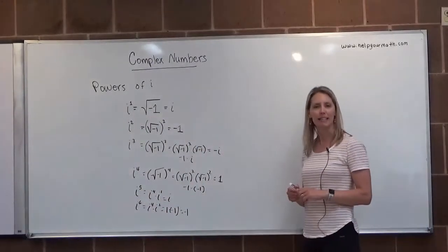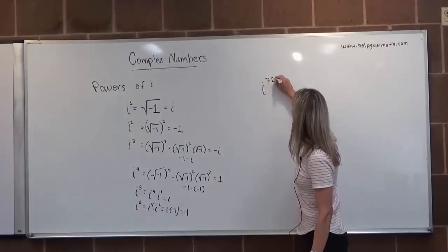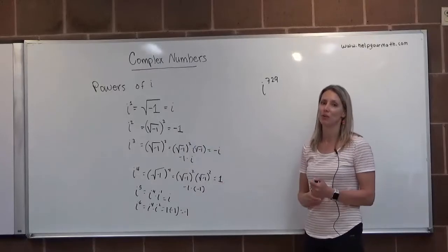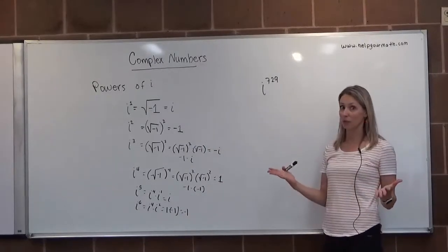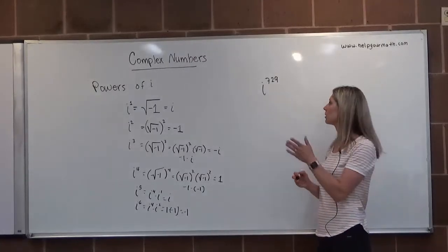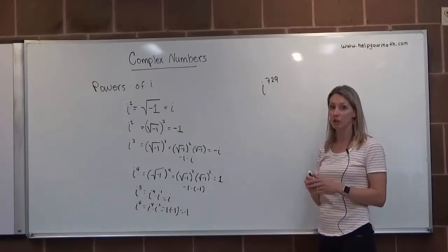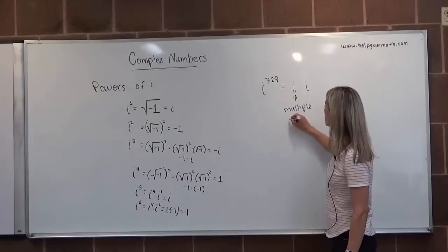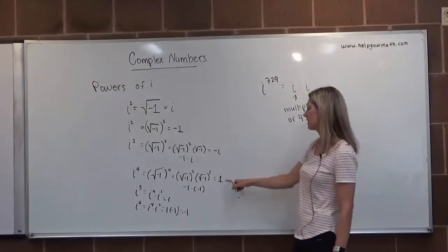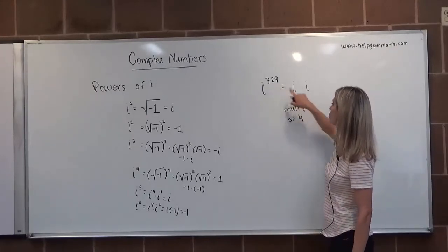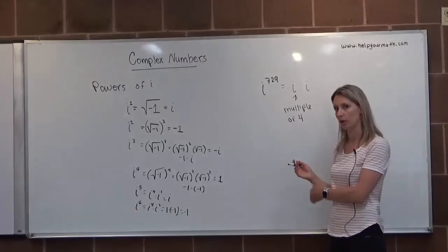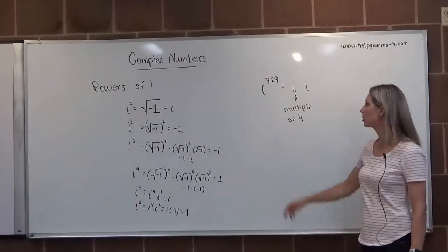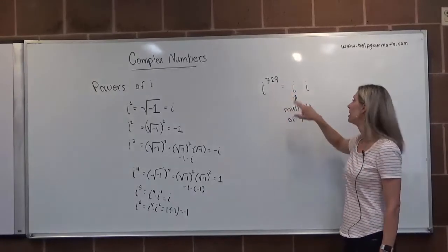So, what's i to the 729th? You could sit there and count up to 729, but I'm guessing you have better things to do with your time. Instead, what I do is I say, what is the closest multiple of 4 just under 729? I want to rewrite this as i to the something times i to the something, where the first part is a multiple of 4. If it's a multiple of 4, it's going to equal 1. Then the remaining exponent is either 1, 2, or 3, and I can match it up with my known values.